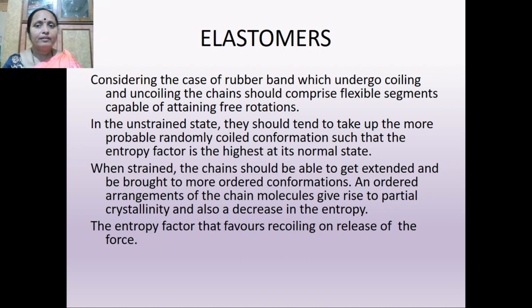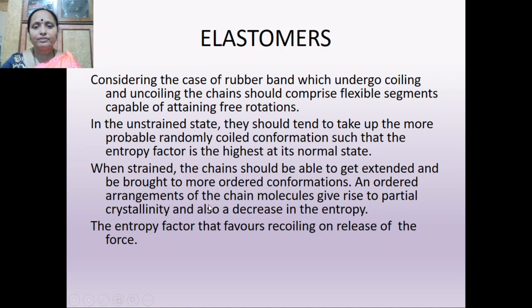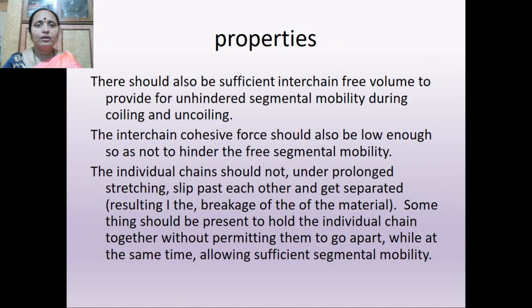Considering the case of a rubber band which undergoes coiling and uncoiling: the chain should comprise flexible segments capable of attaining free rotation. In the unstrained state, they should tend to take a more probable random coil conformation such that the entropy factor is highest. When strained, the chain should be able to extend and move to a more ordered conformation. An ordered arrangement of chain molecules gives rise to partial crystallinity and a decrease in entropy. There should be sufficient interchain free volume for unhindered segmental mobility during coiling and uncoiling, and interchain cohesive forces should be low enough not to hinder free segmental mobility.